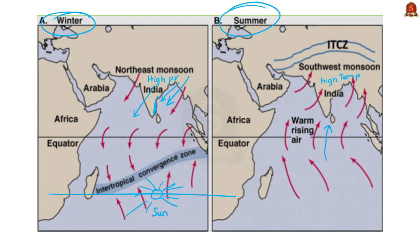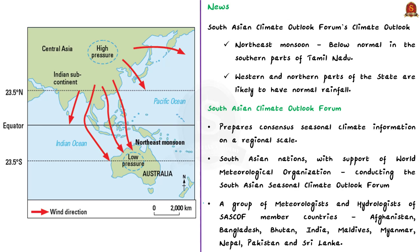Today's news is that the northeast monsoon this year may be below normal in the southern parts of Tamil Nadu. However, western and northern parts of the state are likely to have normal rainfall. These monsoon forecasts are part of the South Asian Climate Outlook Forum's climate outlook in South Asia.